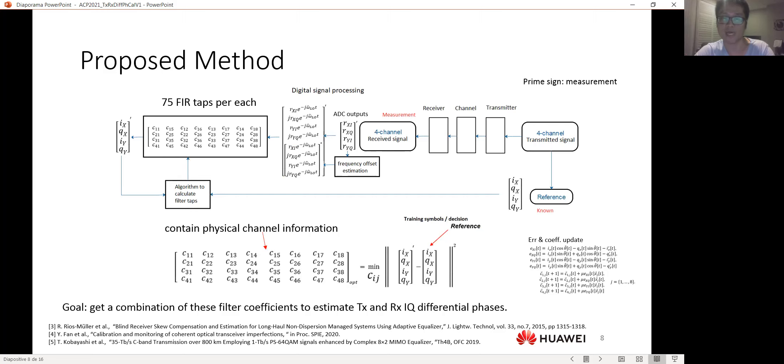Now, we have eight inputs and convoluted with a filter bank with a dimension four by eight. And each coefficient of the filter bank consists of 75 FIR taps. We're not going to talk about optimization of the coefficients because the principle of MMSE is well known.